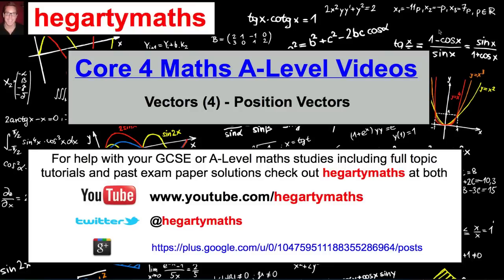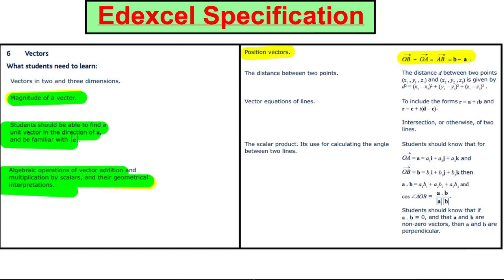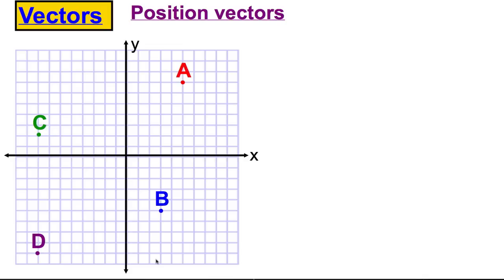Welcome to another A-level maths video from Hegarty Maths. In this video we're talking about vectors, and in particular position vectors. For more help with your maths GCSE or A-level, check out YouTube, Twitter, or Google Plus. This is our fourth video on vectors for the LXL course, but it's applicable to most modules. We're going to talk about position vectors and the fact that the vector AB can be written as vector b minus vector a.